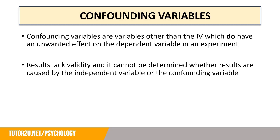So whereas an extraneous variable is identified at the start of the study before it has taken place and a researcher tries to control for it, a confounding variable is a variable other than the IV which does have an impact on the dependent variable — one that has already had an impact within the study.